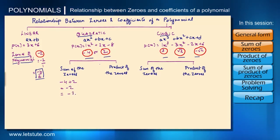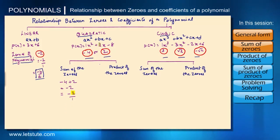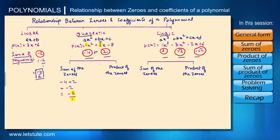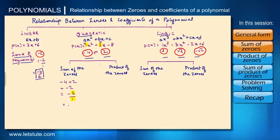Minus two is also written as minus two upon one. Here two is the coefficient of x and one is the coefficient of x squared. When you compare this, b is two and a is one. So the sum of the zeros equals minus b upon a.